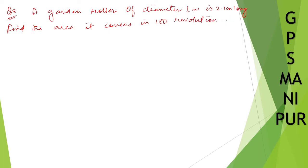This question is similar to the previous one. Solution: A garden roller has diameter equal to 1 meter, so radius will be equal to diameter divided by 2, which is 0.5 meters. Height or length is 2.1 meters. Therefore, let us find the curved surface area